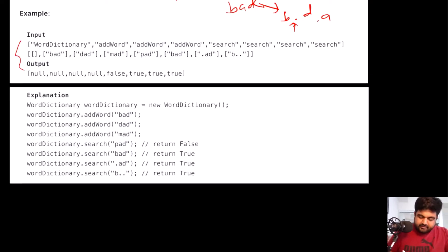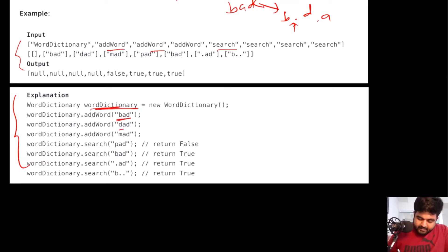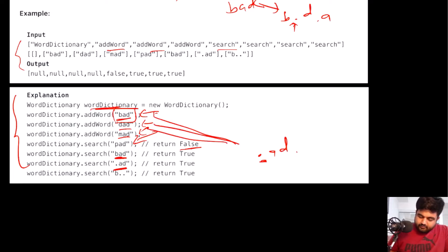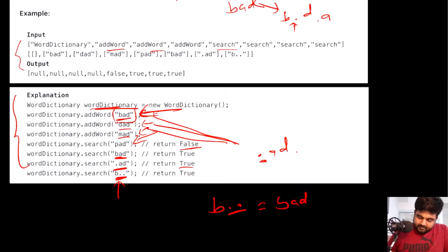Let's understand this with an example. We initialize the WordDictionary object and add the words bad, dead, and mad. Now first we search for 'pad' — pad is not present so we return false. Then 'bad' is present so we return true. Then we search for '.ad': the dot can mean anything, and we already have bad, dead, and mad that all match, so we return true. We are also given the search string 'b..' — for these two dots we can substitute any letters, and since we already have 'bad' added, we return true.